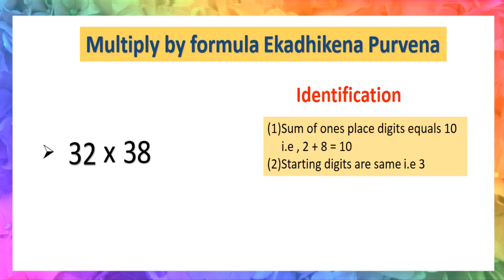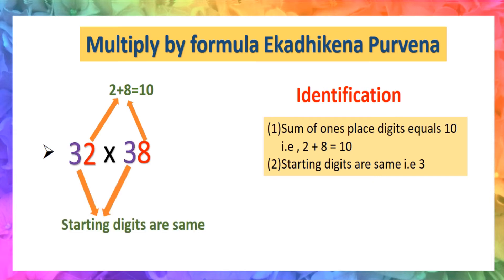Let's see another example: 32 × 38. The last digit of 32 is 2 and the last digit of 38 is 8. The sum of the ones-place digits is 10. The starting digit of both numbers is the same — that is, 3. So in this question also, we can apply Sutra Ekadhiken Purven.